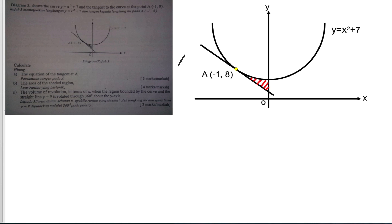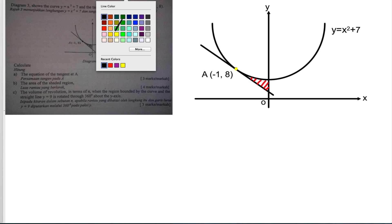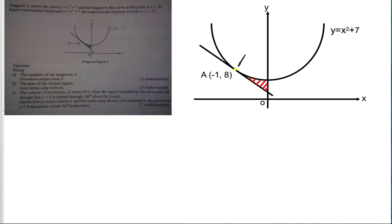Before we start, let me understand the coordinate A. It tells us A is at (-1, 8). So from here to here is 8 on the y-axis, and from here to here is negative 1 on the x-axis. So I'm going to write negative 1 here and 8 here. This is something very important when you want to find the area later.